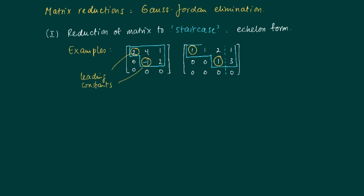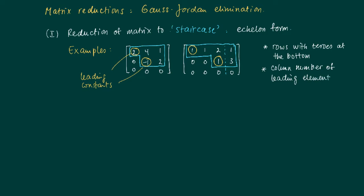What is typical about the echelon form — what actually defines an echelon form? If we have rows with zeros, they appear at the bottom of the matrix. Moreover, the column number of the leading constants increases with the row number, which means we have a staircase form.